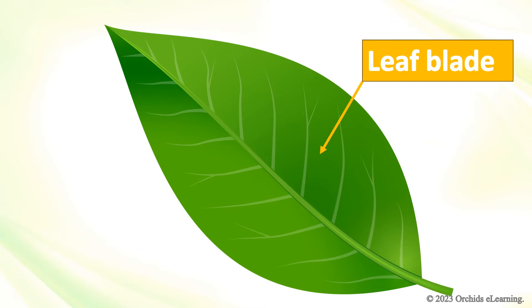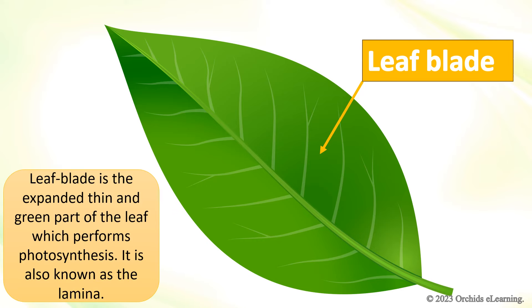Leaf Blade. The leaf blade is the expanded, thin, and green part of the leaf which performs photosynthesis. It is also known as the lamina.